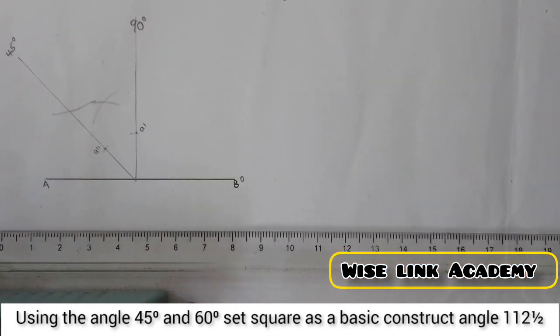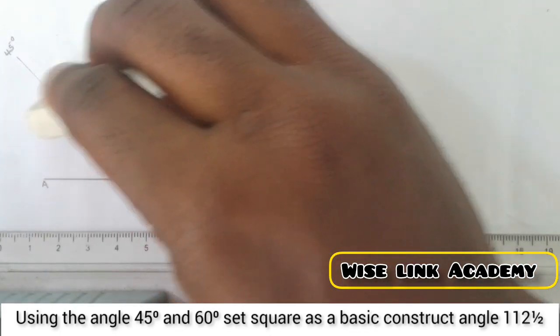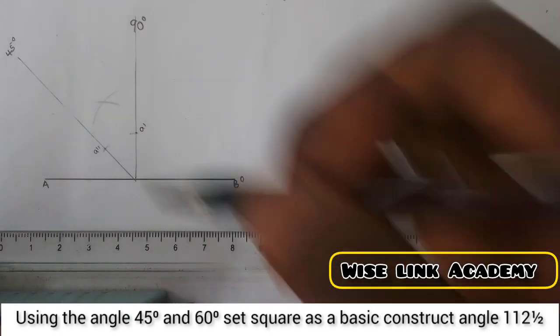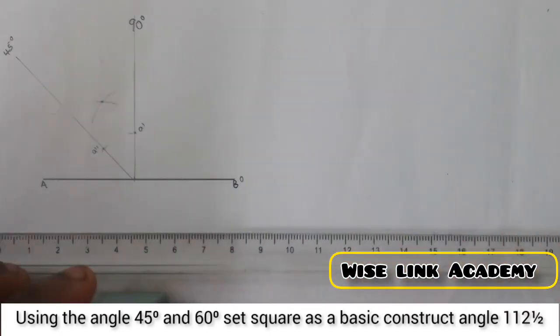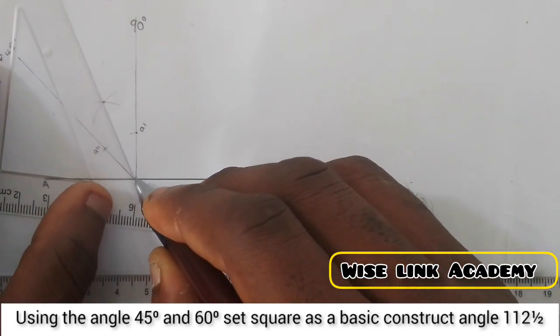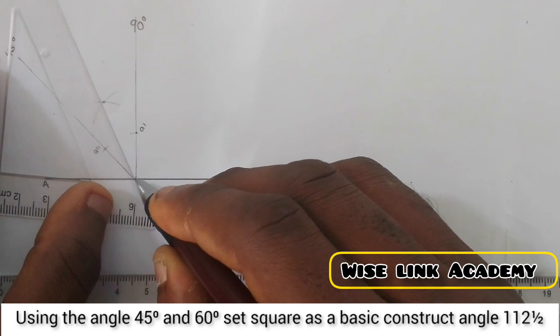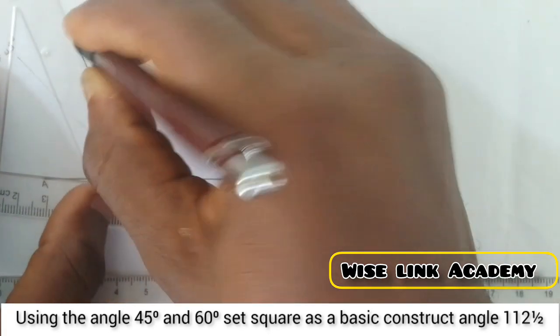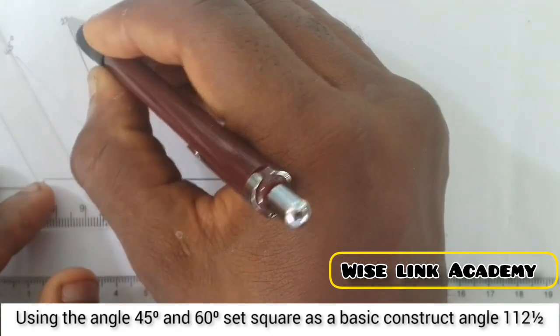Where the arc intersects, where the arc meets is at this point. So at that point, I will draw a thick line, this way. This is 22.5.